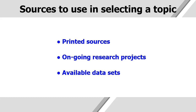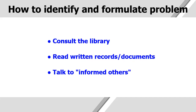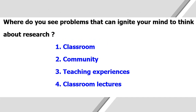The sources to use in selecting a topic are: printed sources, ongoing research projects, and available data sets. Now let's see how to identify and formulate a problem. The first step is to consult the library, and the next is to read written records or documents. Another approach is to talk to informed others. The next question is: where do you see problems that can ignite your mind to think about research?